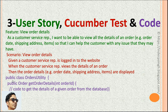This can also be implemented in Java by the same public class OrdersUtility. It is going to have a public method called getOrderDetails, and the return type of this method is an order object. The parameter needed by this is the order ID. Here the developers have to write the code to get the details of a given order from a database.